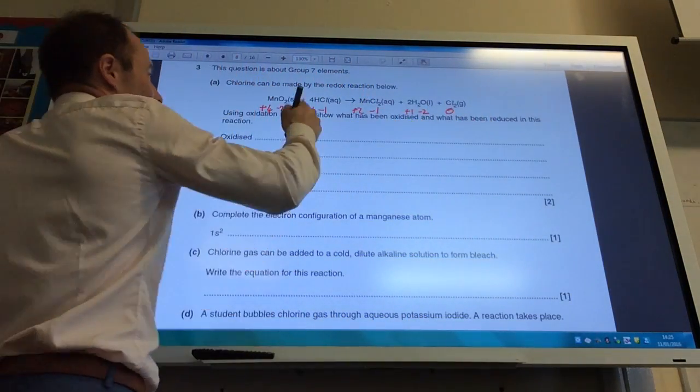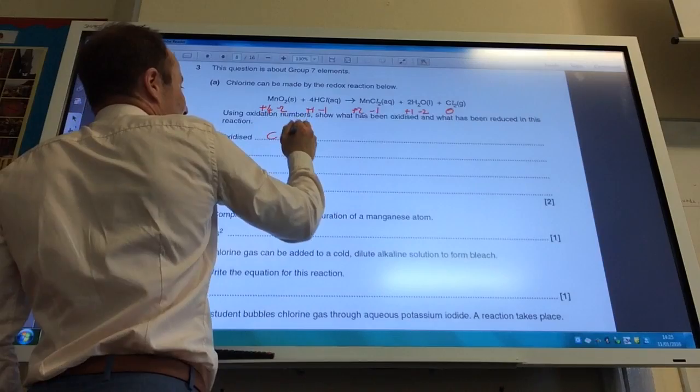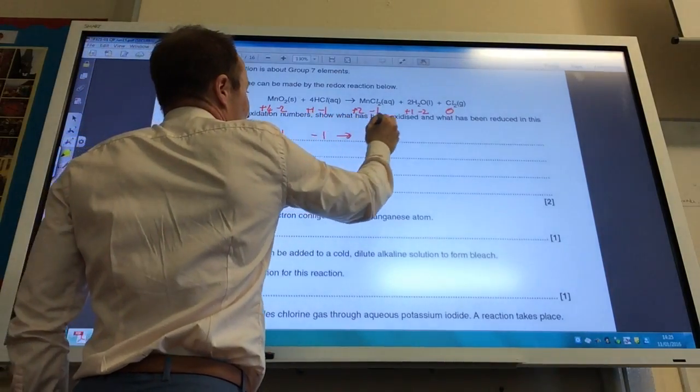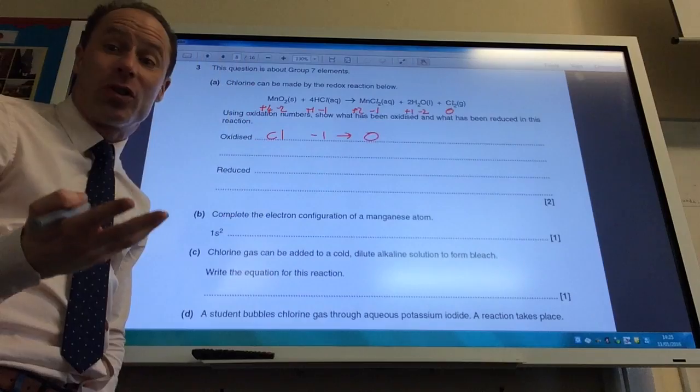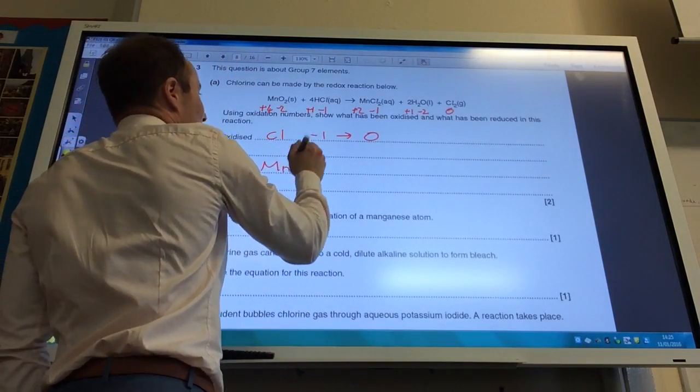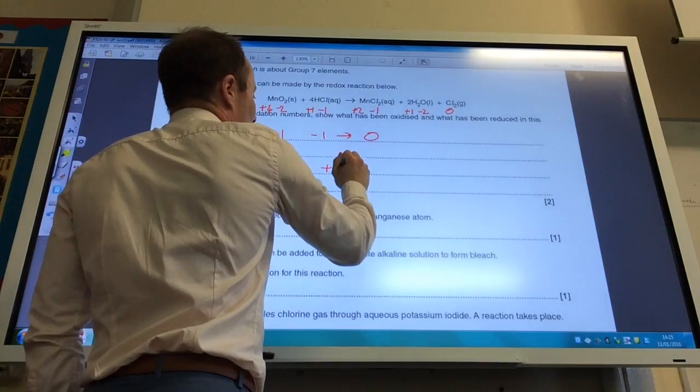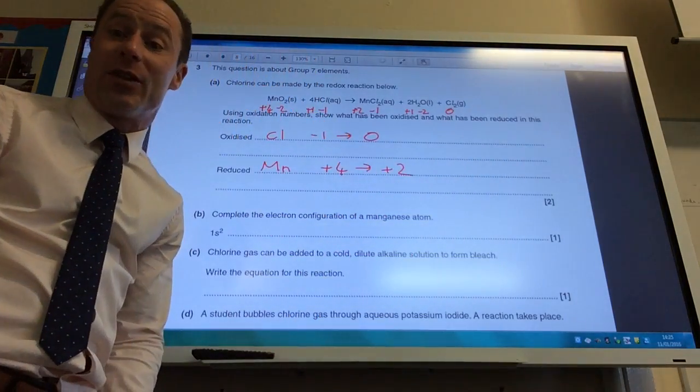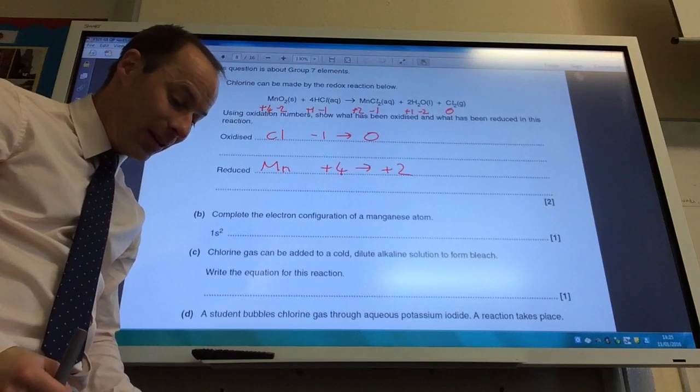So what's been oxidised? Well, it looks to me that Cl has been oxidised, because it's gone from -1 to 0. Its oxidation number has gone up. What's been reduced? Well, manganese has been reduced because it's gone from +4 to +2. And therefore, its oxidation number has decreased.